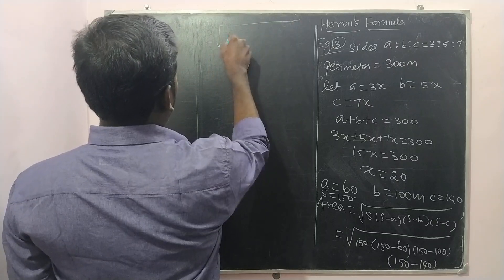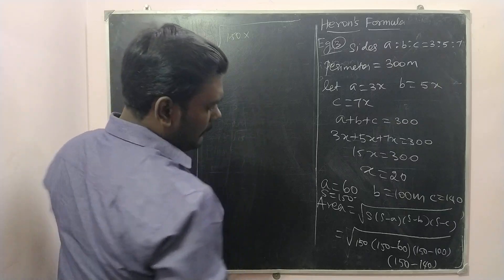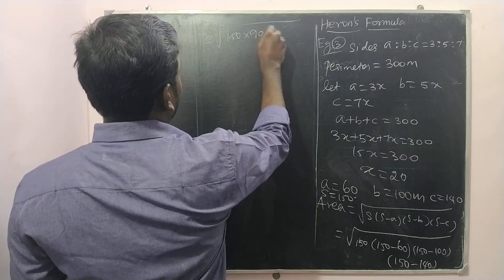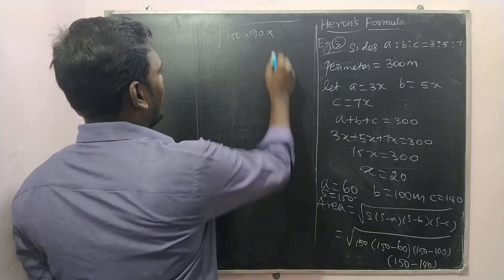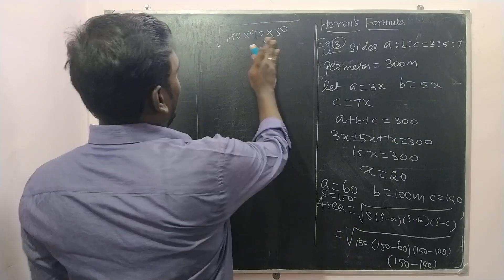We may end up having square root of 150 into 150 minus 60 is 90 into 50 into at last 10.